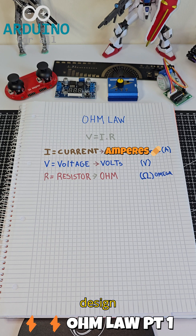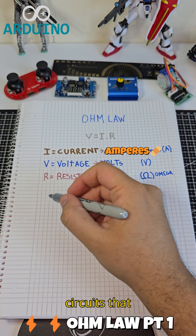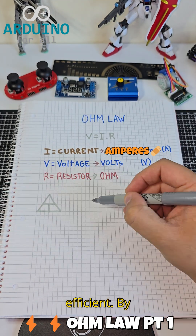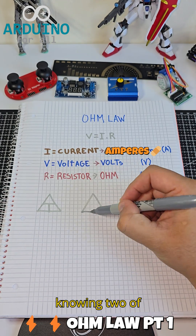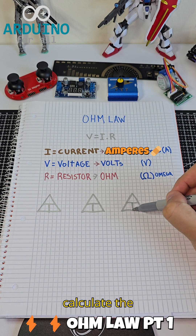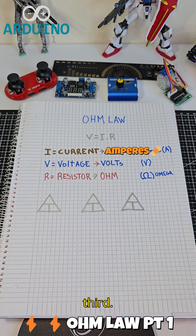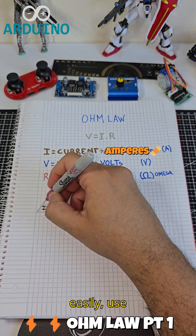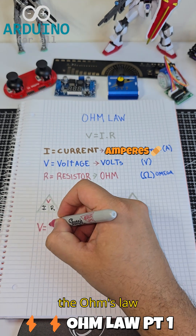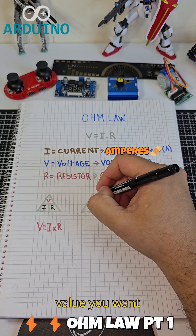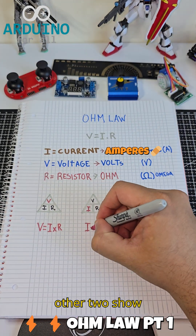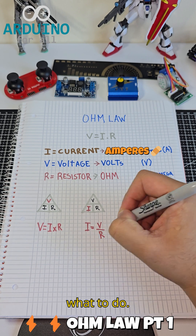This law helps us design circuits that are safe and efficient. By knowing two of these values, you can always calculate the third. To remember it easily, use the Ohm's law triangle. Cover the value you want to find. The other two show what to do.